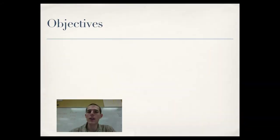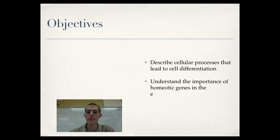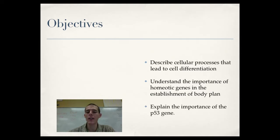By the end of the video, here's the stuff that I need you to know. First, describe cellular processes that lead to cell differentiation. Second, understand the importance of homeotic genes in the establishment of body plan. And finally, explain the importance of the P53 gene.